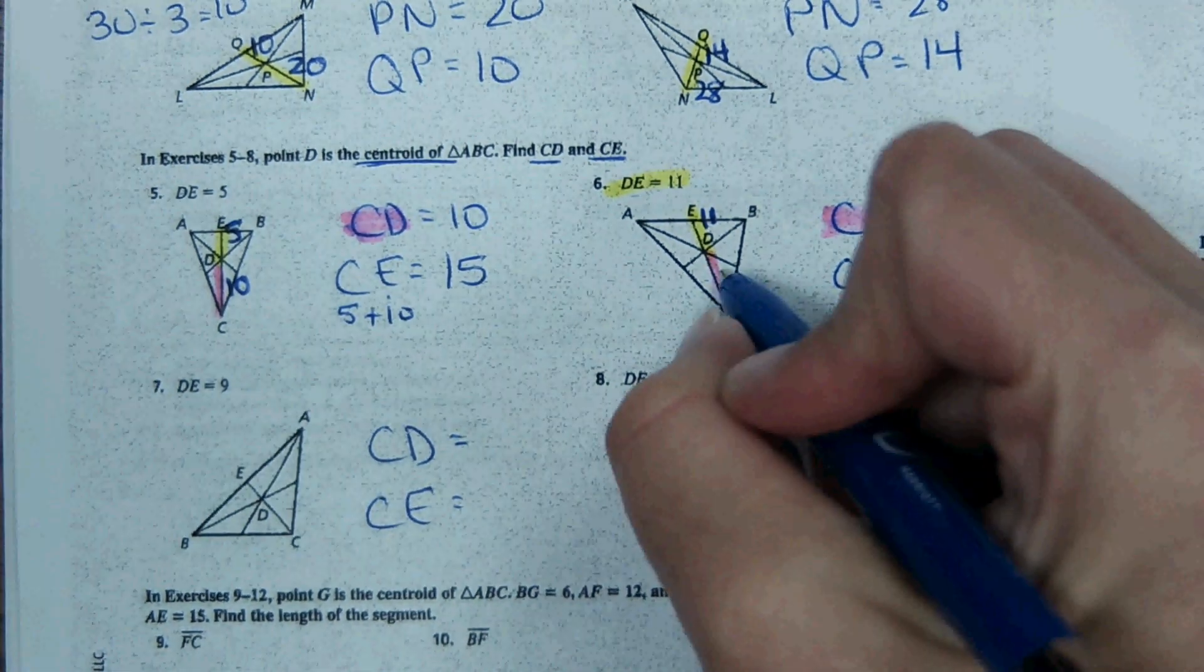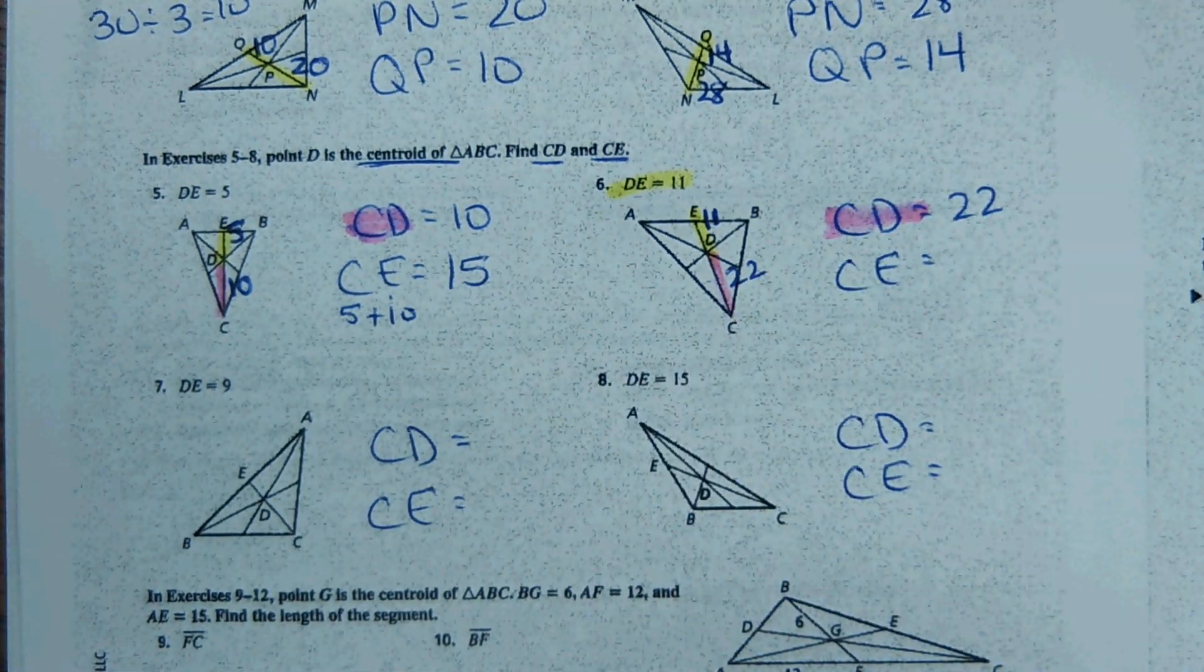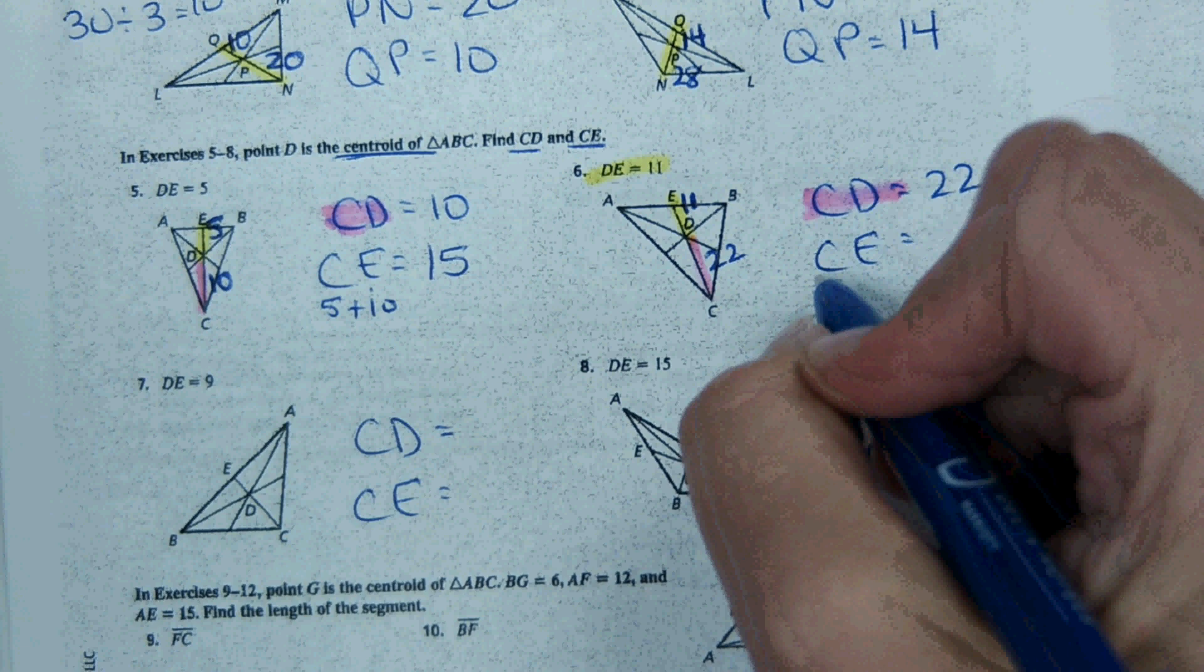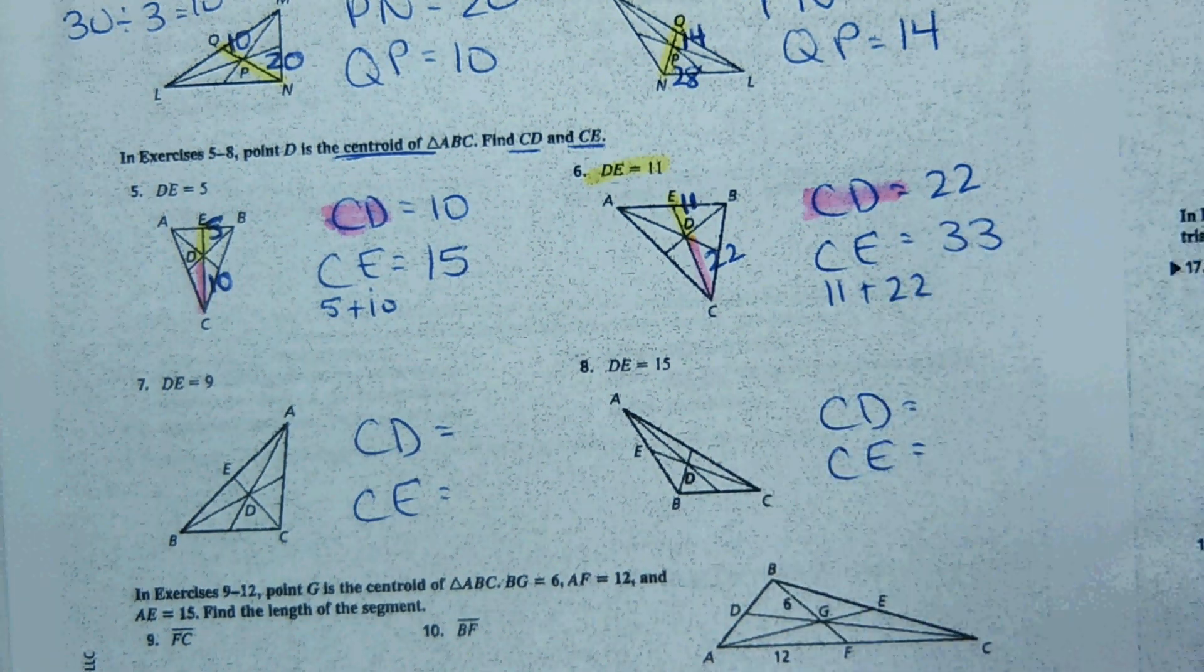And number 6. Now we just repeat that process. DE is 11 right here. So DE is 11. CD right here is the longer portion of the segment. 11 times 2 is 22. And then to find the whole length, just 11 plus 22 is 33.